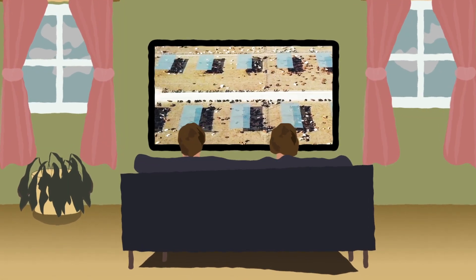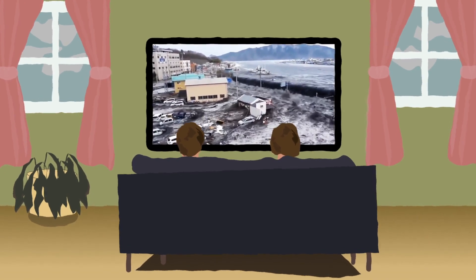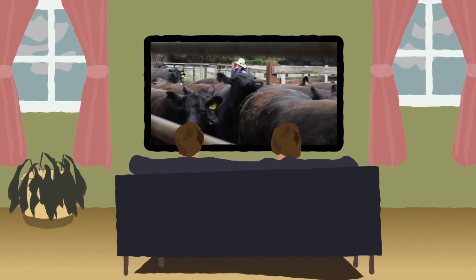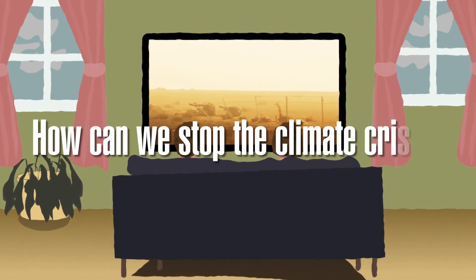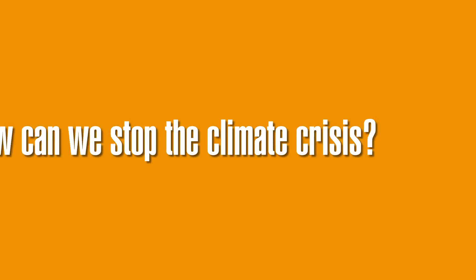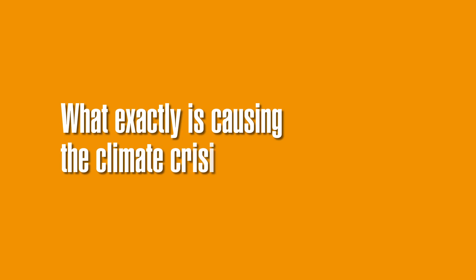We often hear in the news about global warming, sea level rise, methane emissions, and more. But what exactly can be done to stop the climate crisis? First off, we need to know, what exactly is causing the climate crisis?